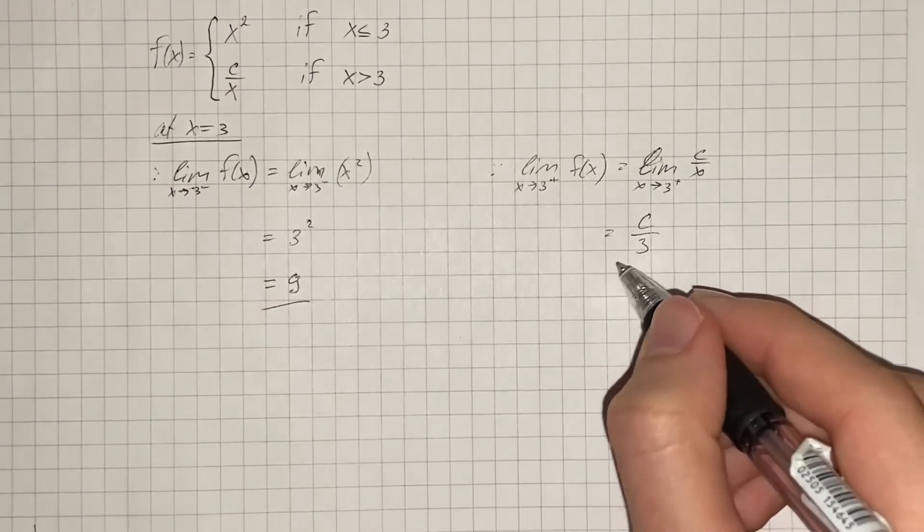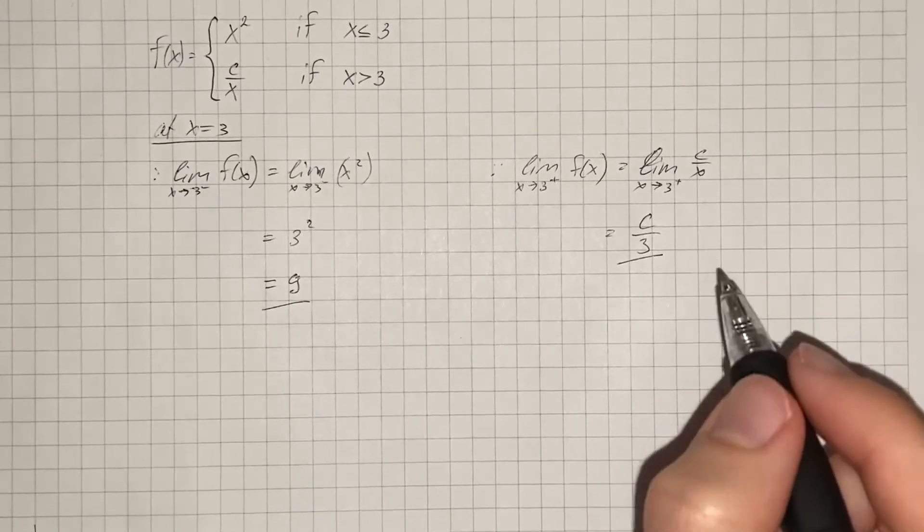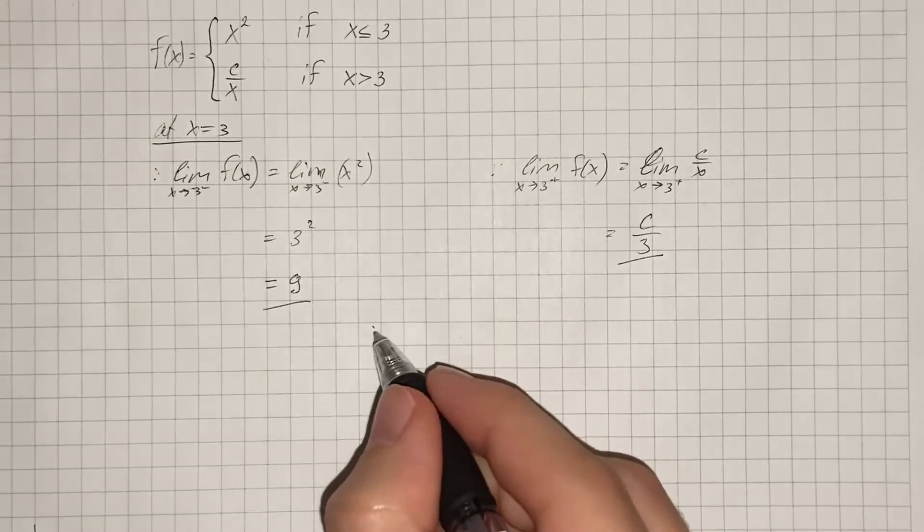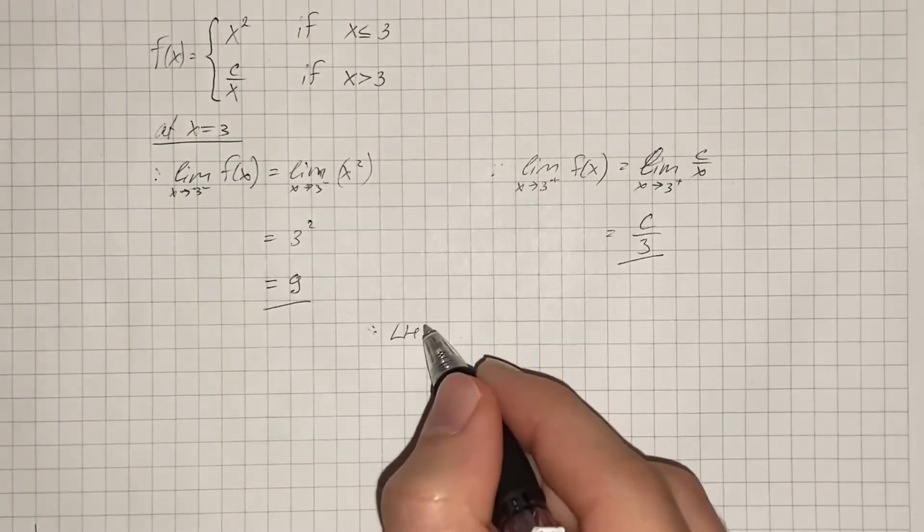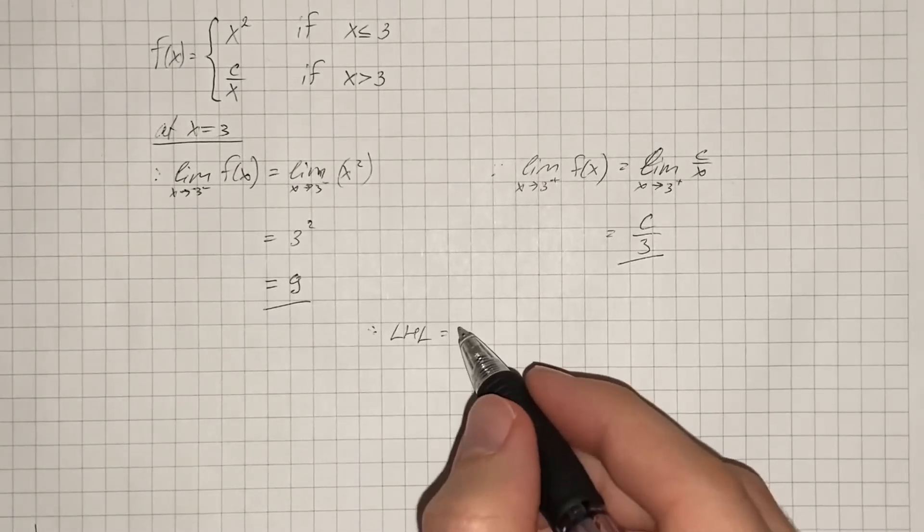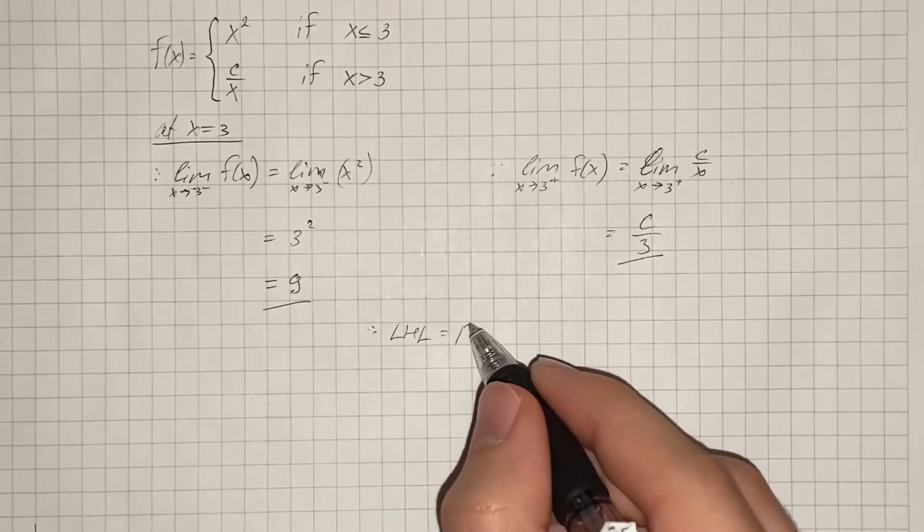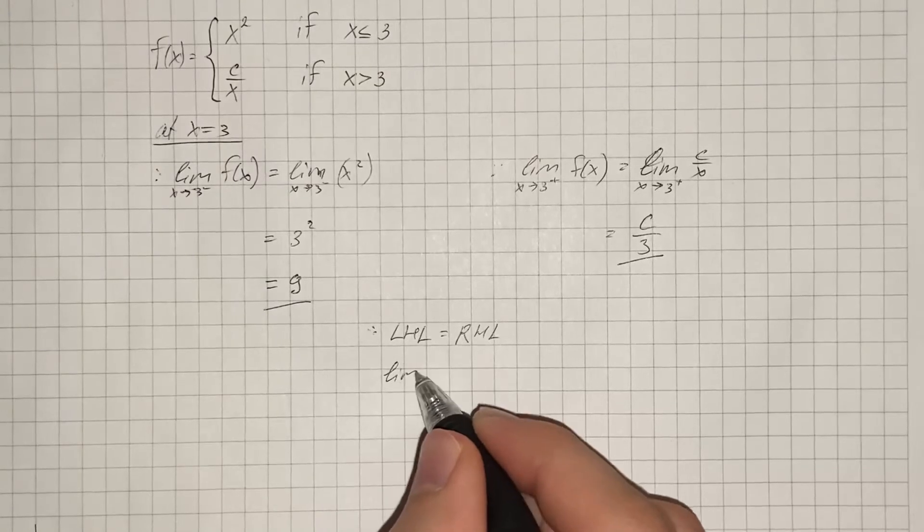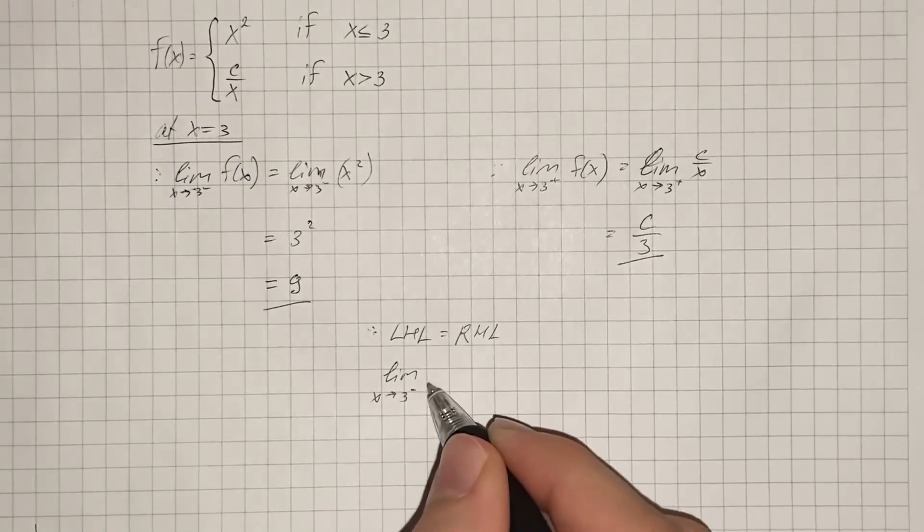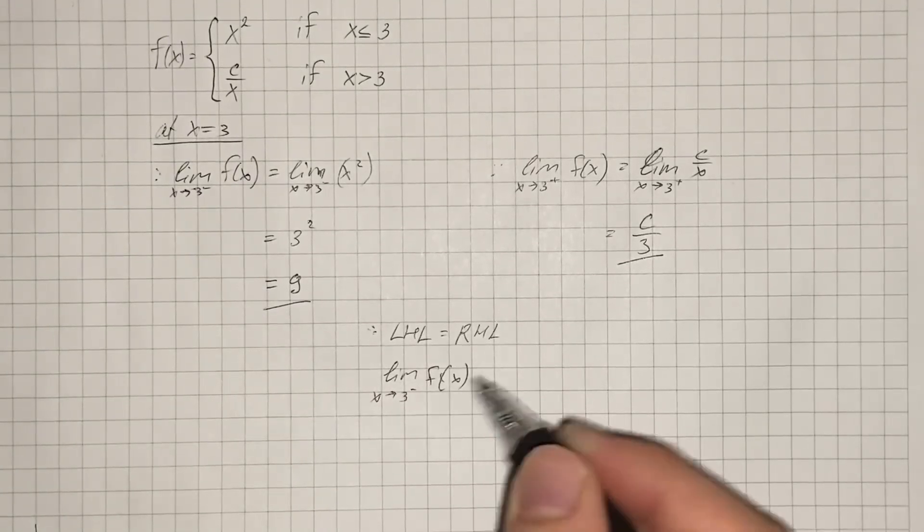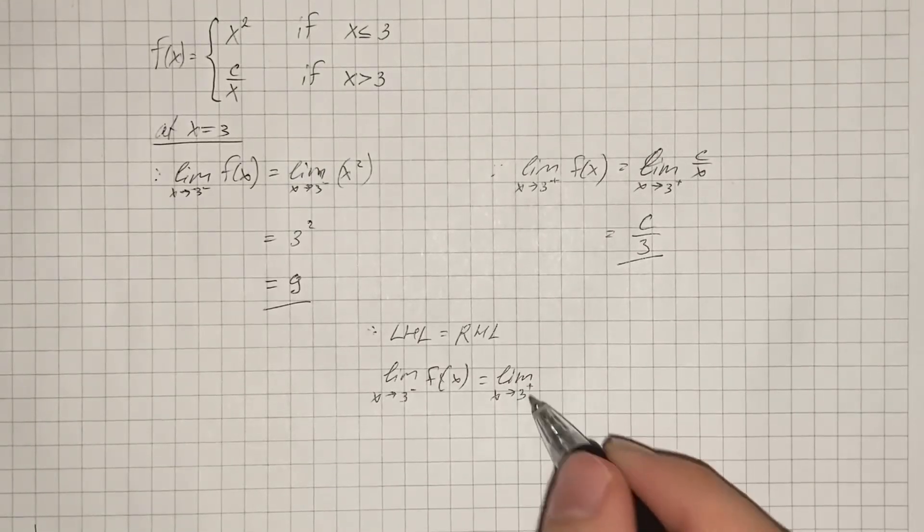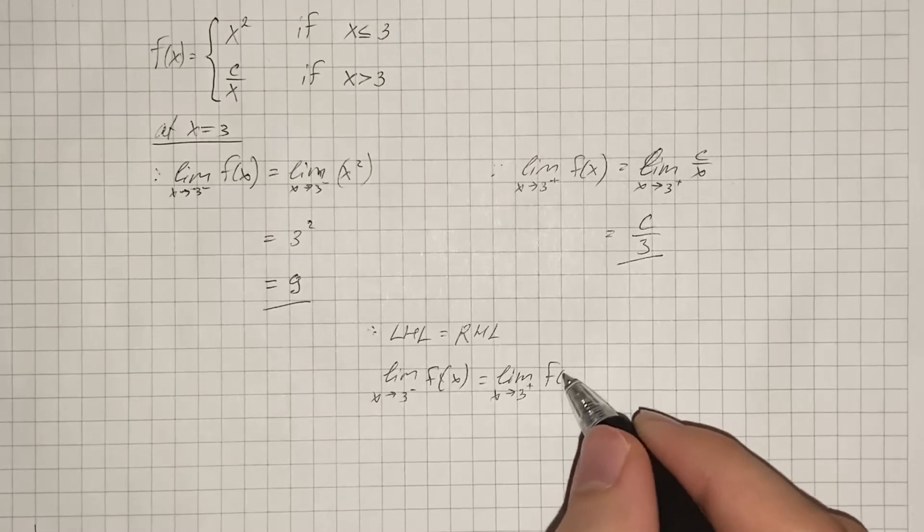So that's our right hand limit. And for the function to be continuous at x equals 3, both left hand limit and right hand limit must be equal. Therefore, limit as x approaches 3 minus of f(x) equals limit as x approaches 3 from the right side of f(x).